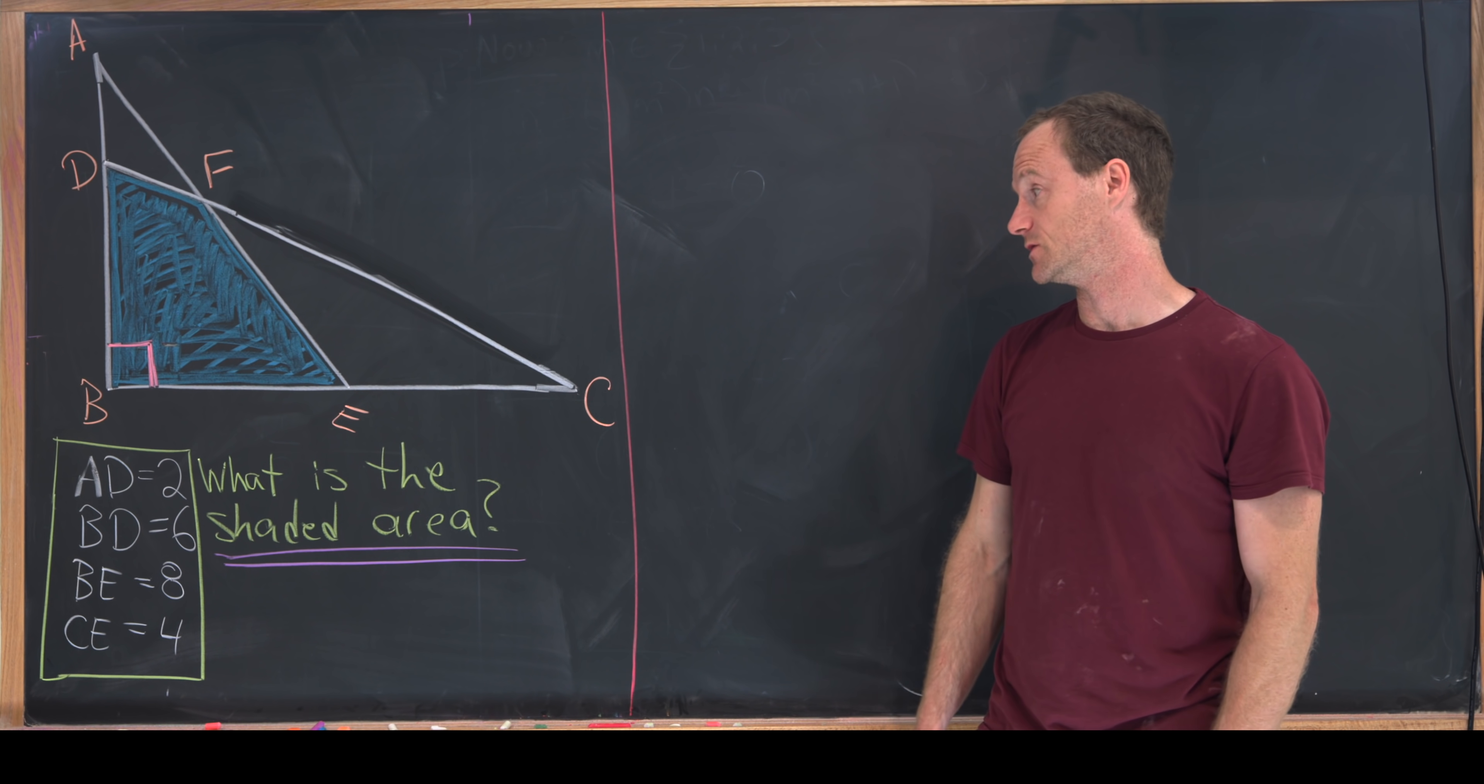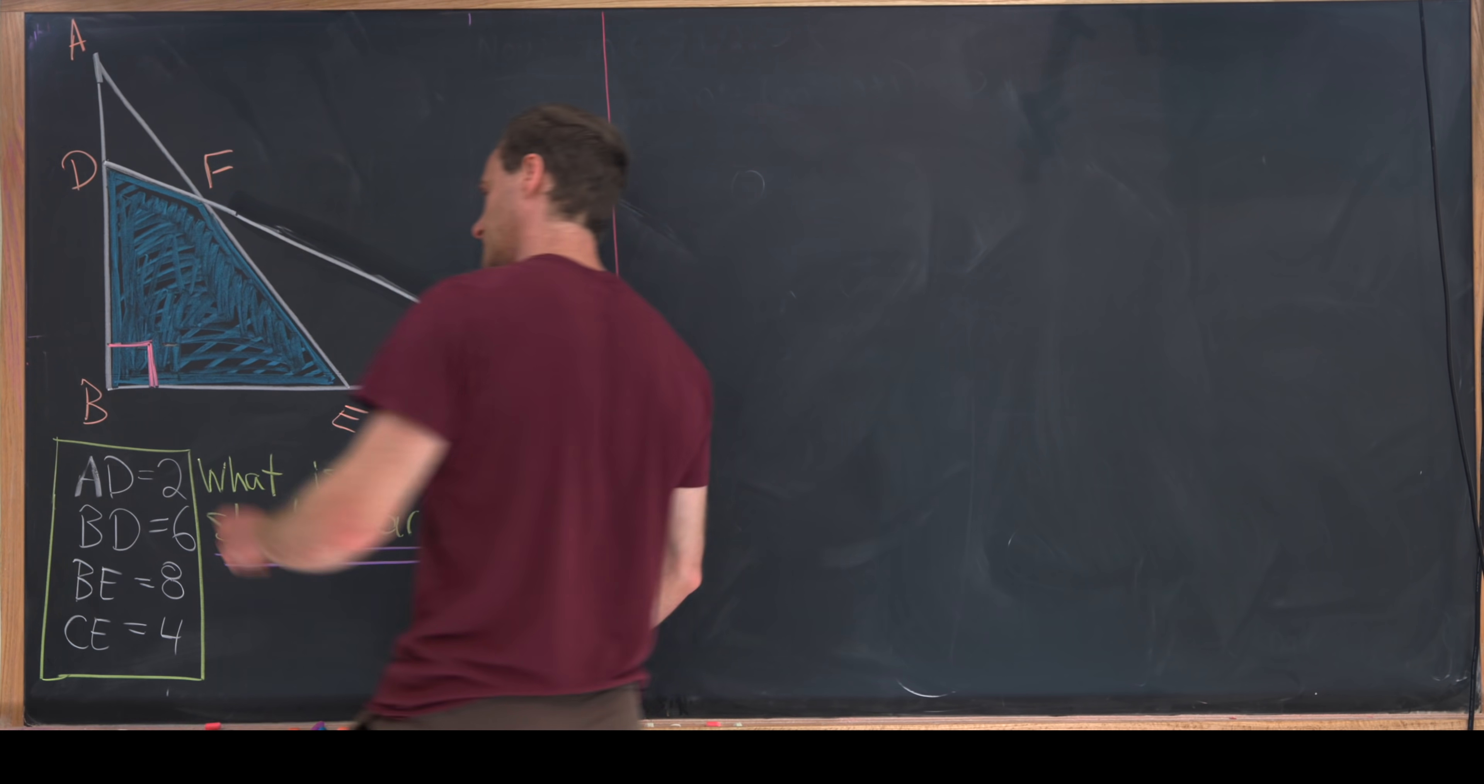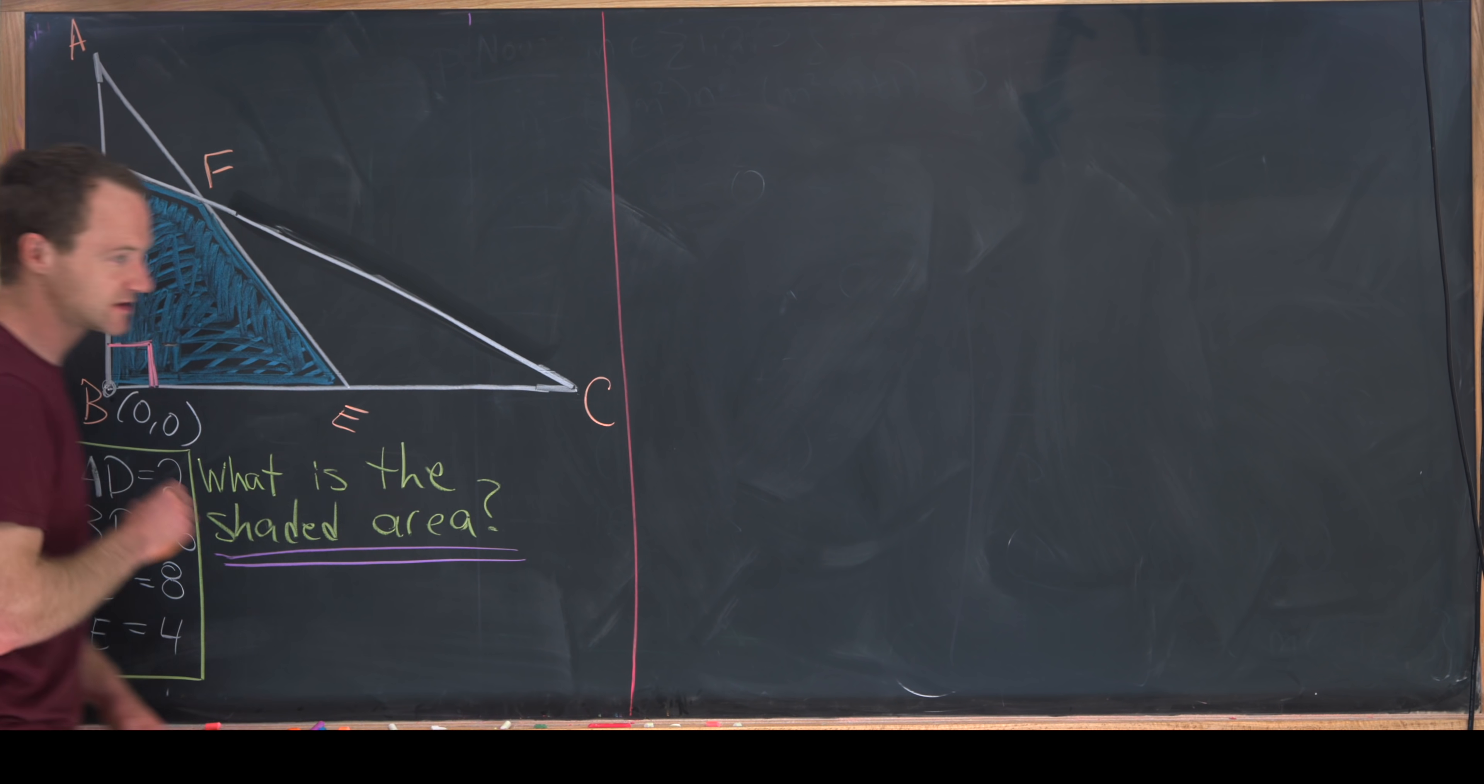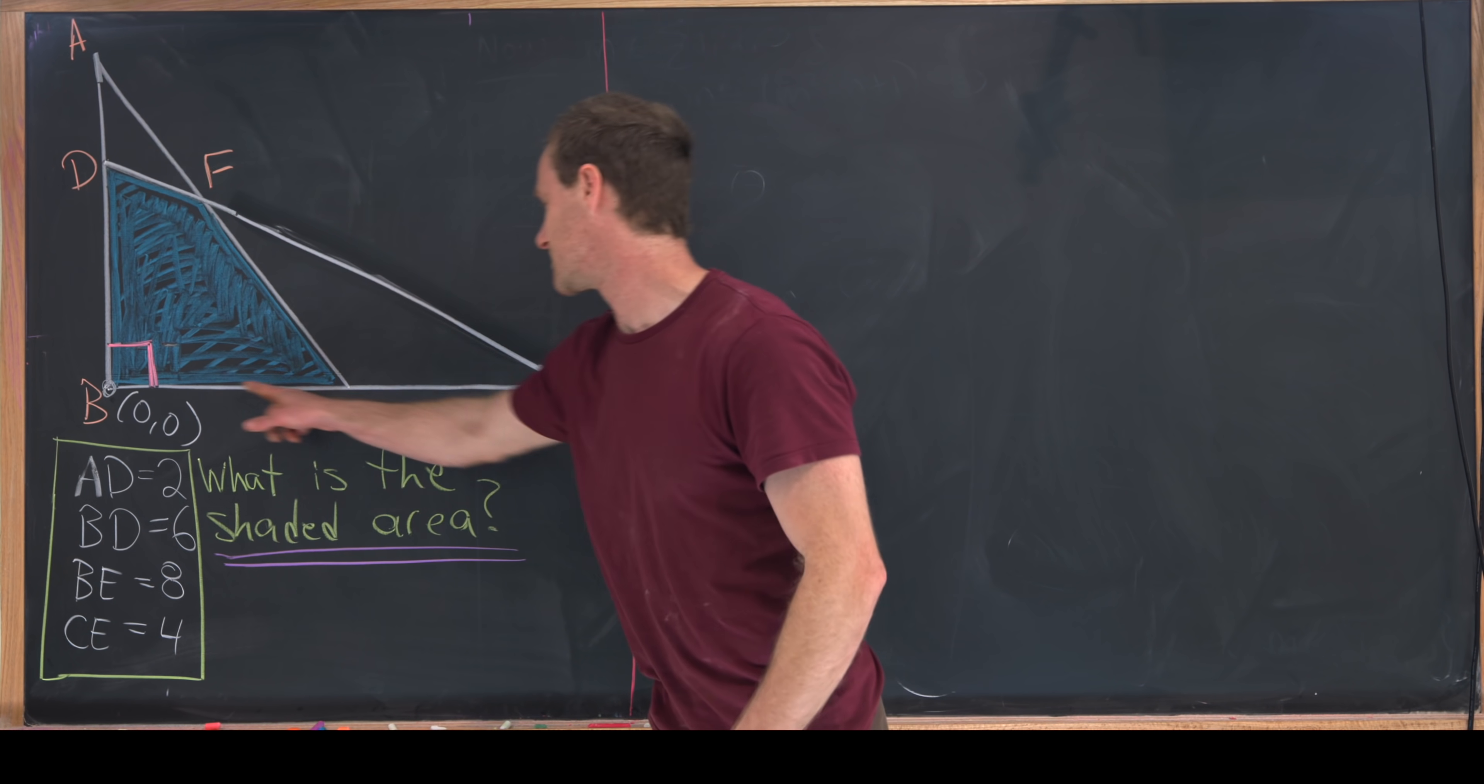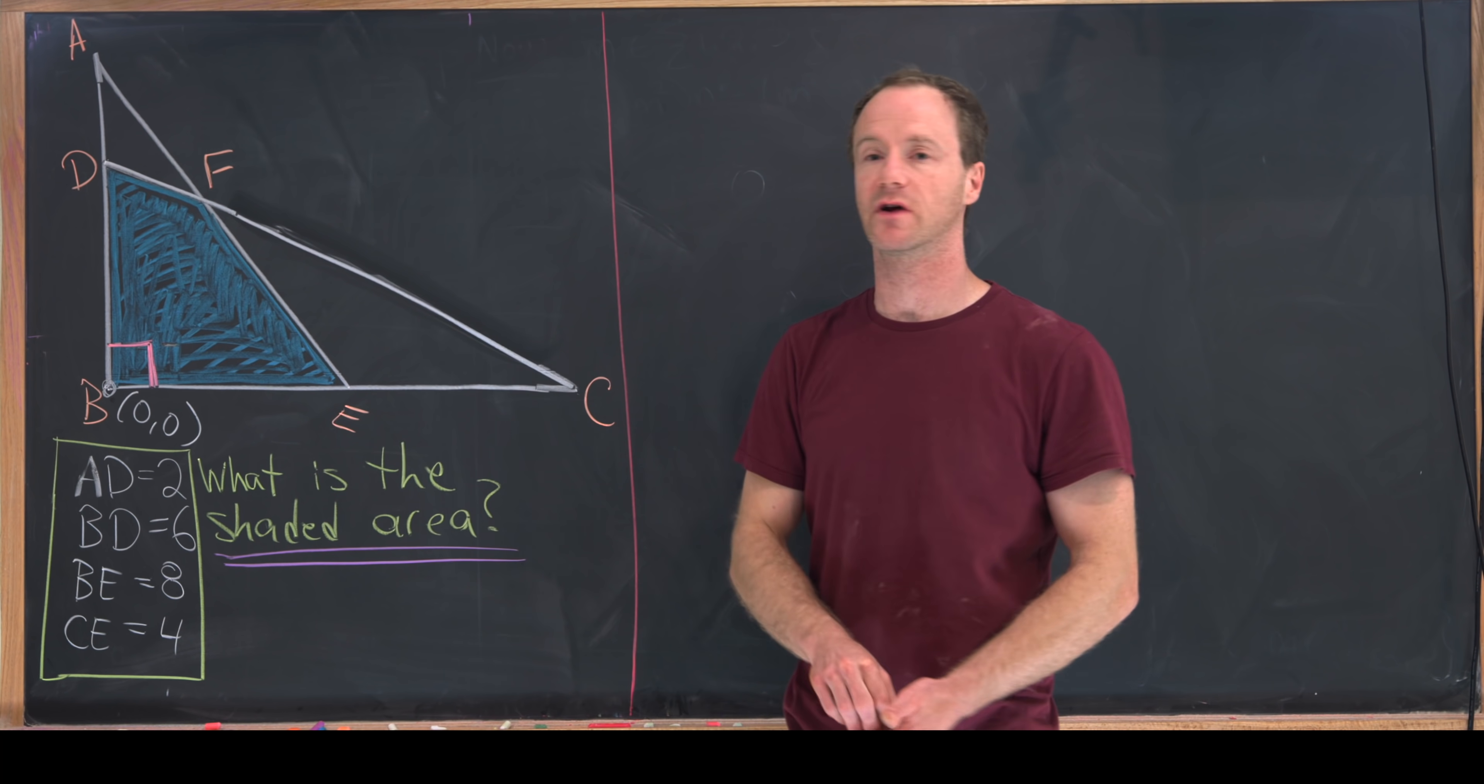There are probably a whole lot of ways to do this, but I'm going to start by putting it in the coordinate plane. The obvious place to put the origin is at this vertex right here where we've got this right angle, because the x-axis is coming off in this direction and then the y-axis is going up in that direction.